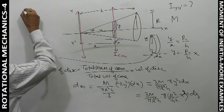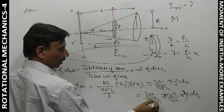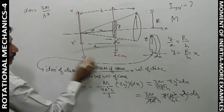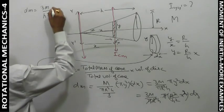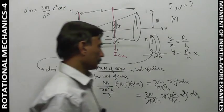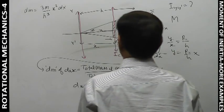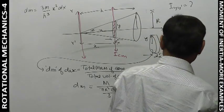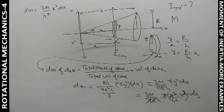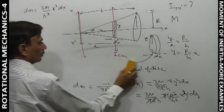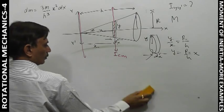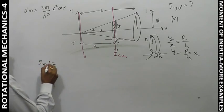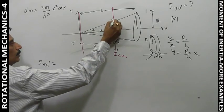So dm becomes: π and π cancel, r² and r² cancel, giving dm = (3m/h³)·x²·dx. Now x² dx is the remaining term. So the mass element of the small disc is dm = (3m/h³)·x²·dx. This is the expression for Iyy'.